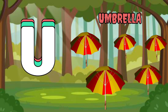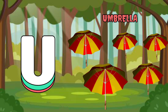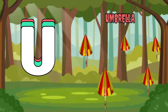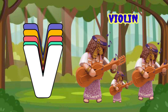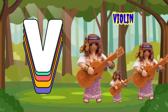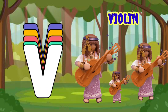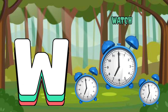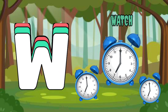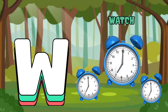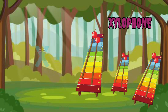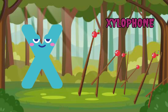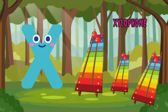U is for umbrella, u-u-u-umbrella. V is for violin, v-v-violin. W is for watch, w-w-watch. X is for xylophone, z-z-xylophone.